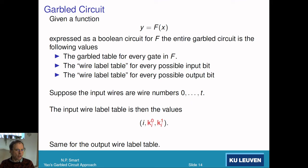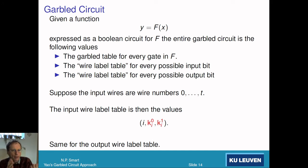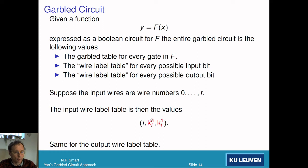A garbled circuit combines all of these components. For every gate in the circuit we compute a garbled gate — the garbled table. We also have the input wire labels: for each input bit position we have a table mapping bit value zero and bit value one to their respective wire label keys. Similarly we have an output wire label table. That is what a garbled circuit is.